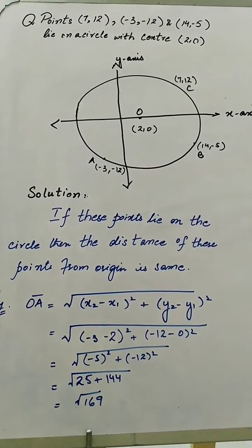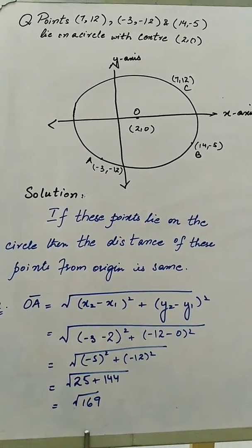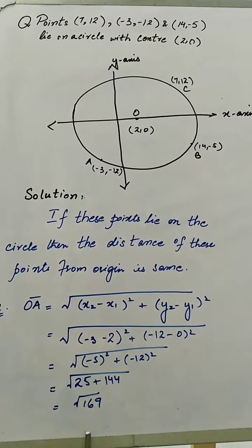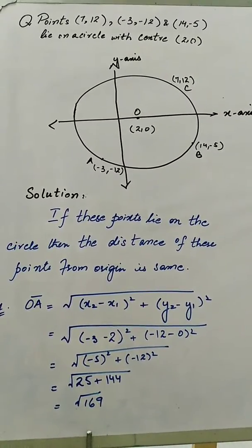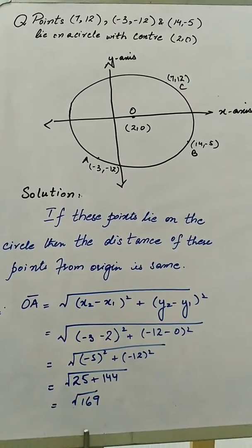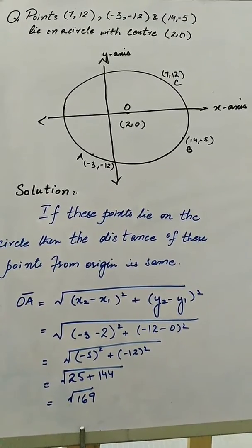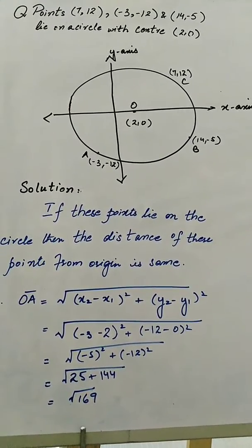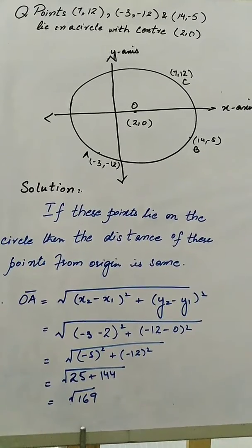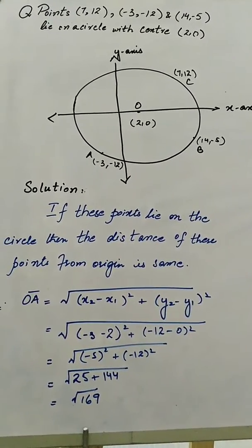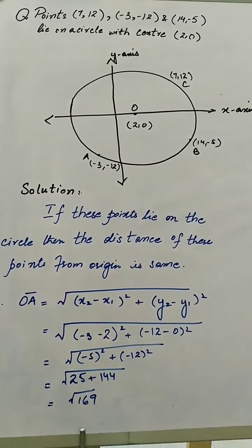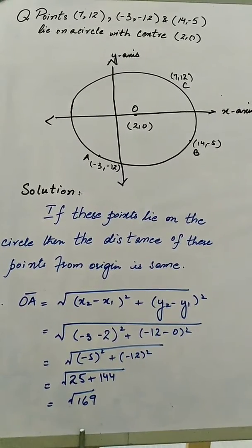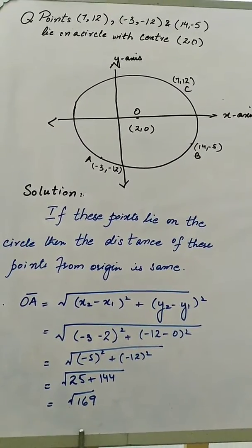Now look at another question in which we are given a circle with a center of (2, 0) and we have to prove that three given points lie on the circle. We draw a rough diagram just to get an idea and denote these points as A, B, C and O, where O is the center point. If these points lie on the circle, their distance from the center should be equal, so we calculate the distance of each point.